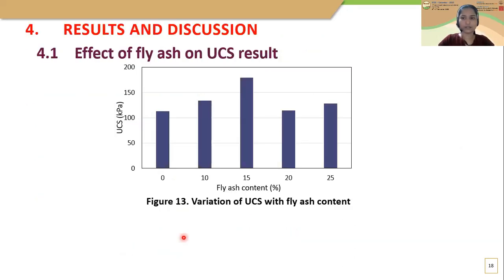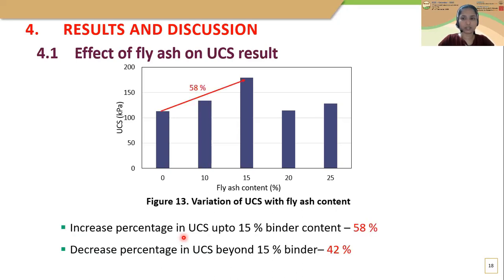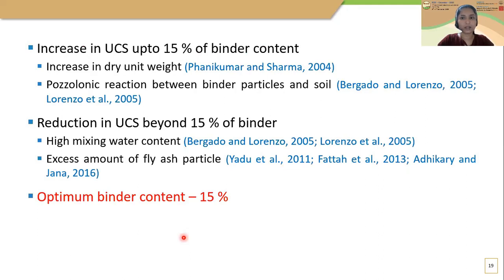Moving to results and discussion: the effect of fly ash on UCS results. The UCS value of treated samples increased by 58% with binder content up to 15%, then reduced by 42% with any further addition of binder. Initially, unit weight of the sample increased with binder content due to the increase in total weight of solids. Fly ash has the potential to develop pozzolanic reactions, causing pozzolanic products to bind the clay particles together and form a strong bonded matrix, which increased UCS up to 15% binder content.